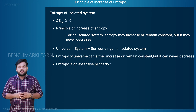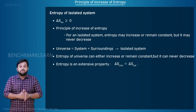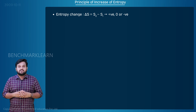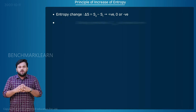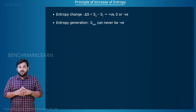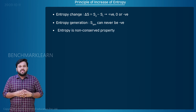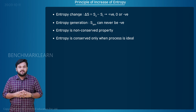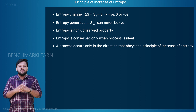Entropy is an extensive property. The entropy change of the universe equals the entropy change of the system plus the entropy change of the surroundings. Entropy change — delta S equal to S2 minus S1 — can be positive, zero, or negative. But entropy generation can never be negative. The entropy generation is caused by the irreversibilities of the system. Entropy is a non-conserved property and is conserved only when the process is ideal. Entropy decides the direction of processes — a process occurs only in the direction that conforms to the principle of increase of entropy.